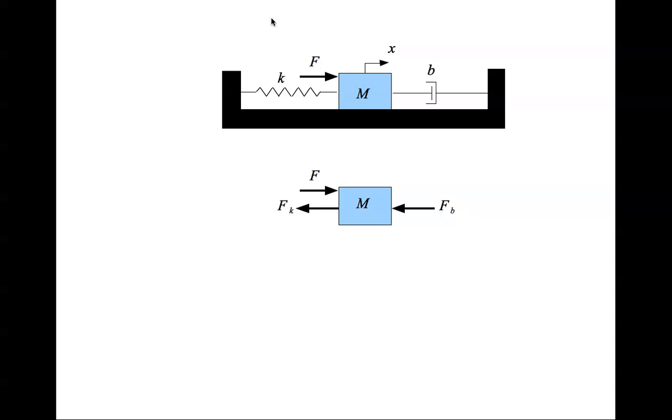Sum all the forces in the x direction and we get the equation M x double dot equals F minus k x minus b x dot.